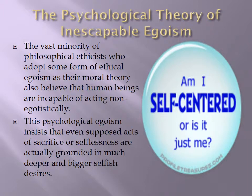One thing tied very closely to ethical egoism is psychological egoism. The minority of philosophical ethicists who adopt this moral theory believe that humans are incapable of acting non-egotistically — that even when it looks like we are doing something kind for someone else or making a sacrifice, our real motive is actually some sort of reward or something good for us.